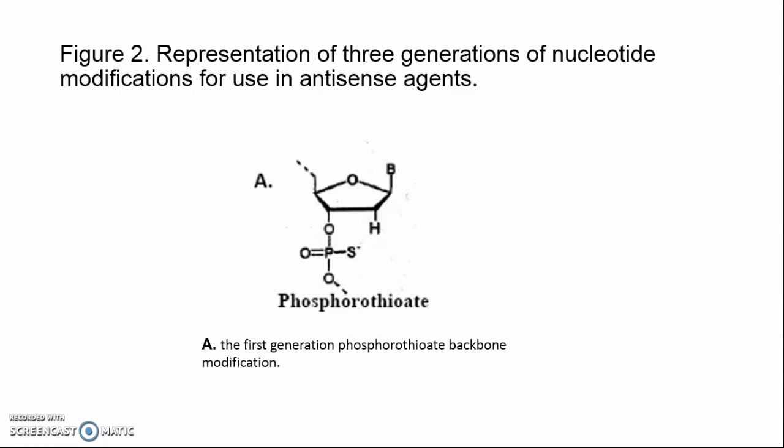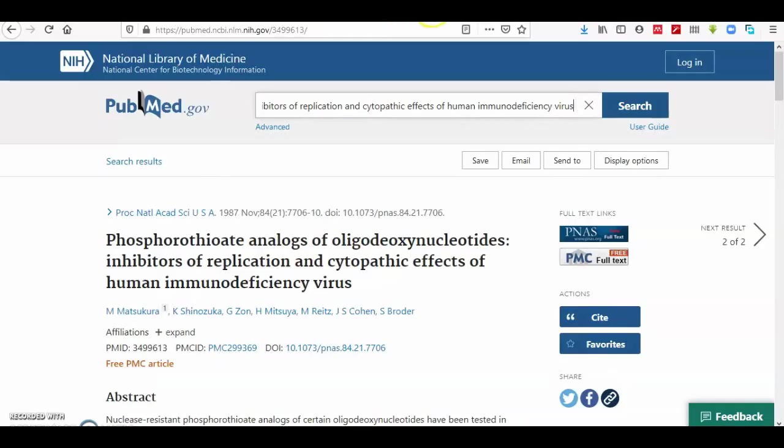The half-life for a phosphorothioated oligonucleotide increased to up to 10 hours in human serum compared to about one hour for an unmodified oligonucleotide having the same sequence. Moreover, Matsukura and colleagues demonstrated that phosphorothioated oligonucleotides were effective hybridins against HIV replication in cultured cells.